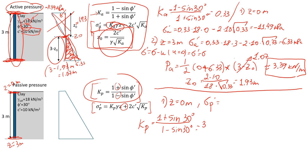Now let's find the effective passive stress at the surface. Putting numbers into the formula: Kp of 3 times unit weight times 0, because it's at the surface, plus 2 times 10 — the same soil with the same cohesion — with the square root of the passive coefficient of 3. That gives us a value of 34.64 kPa.